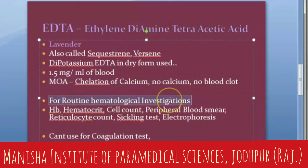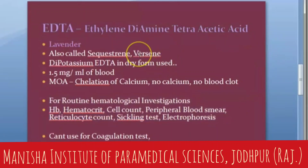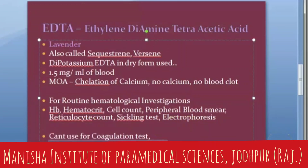EDTA is used for routine hematological investigations: hemoglobin estimation, RBC count, WBC count, PCV, peripheral blood smear, reticulocyte count, and electrophoresis — everything in the physiology lab uses EDTA only, except ESR. You cannot use EDTA for coagulation tests, and it causes pseudothrombocytopenia, so you cannot use it for platelet estimation.